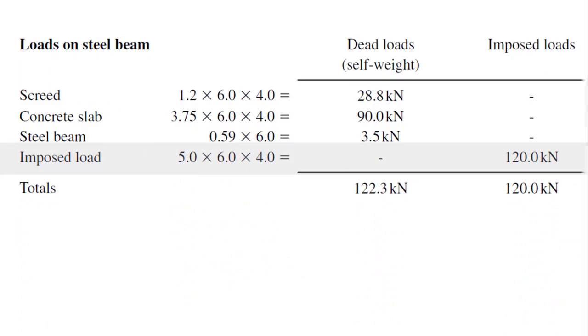Next, we have to calculate imposed load on the slab. 5 is the imposed load on slab, which is given in the design data. 6 times 4 is the shaded area, so the imposed load is 120 kilonewtons.